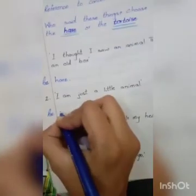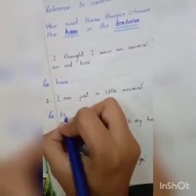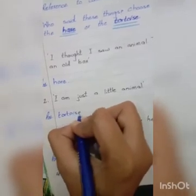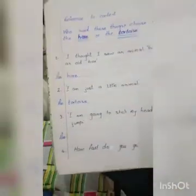The second sentence is: 'I am just a little animal.' Who said this line? Obviously the Tortoise said this line. So we are going to write 'Tortoise' here. This is what Reference to Context is, Level 1.